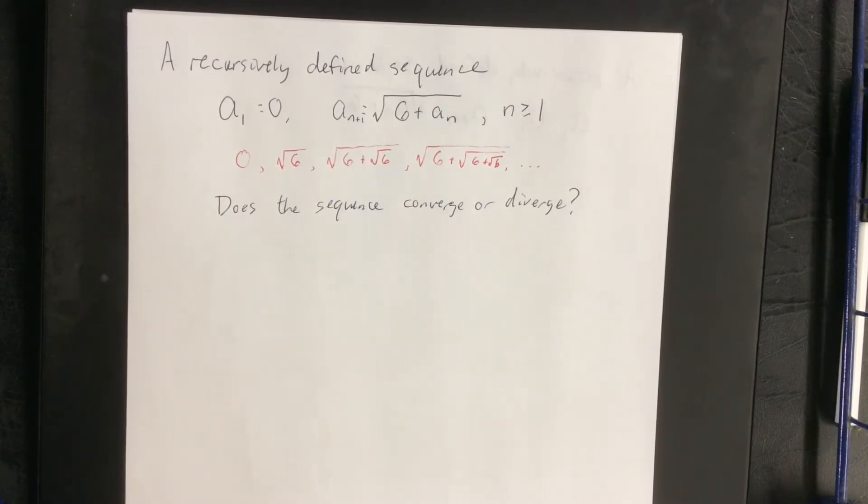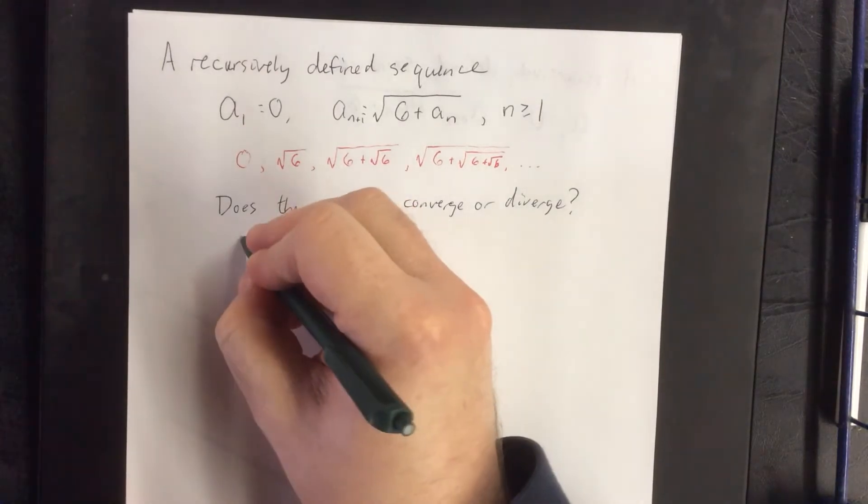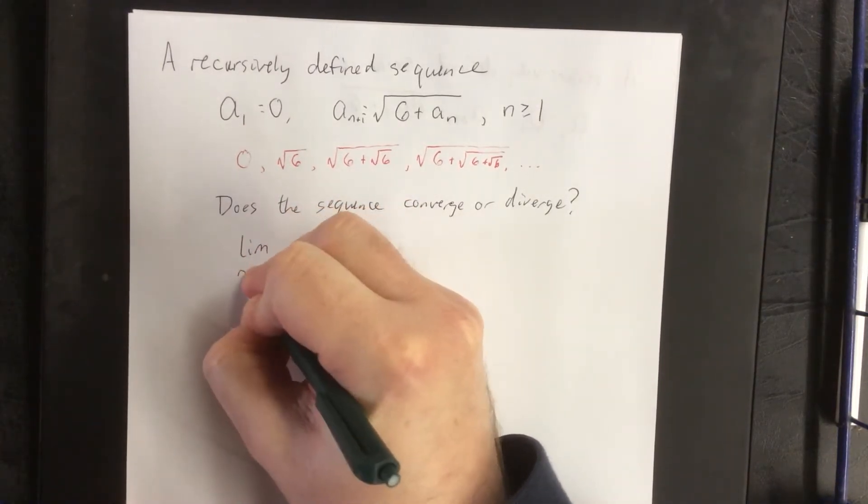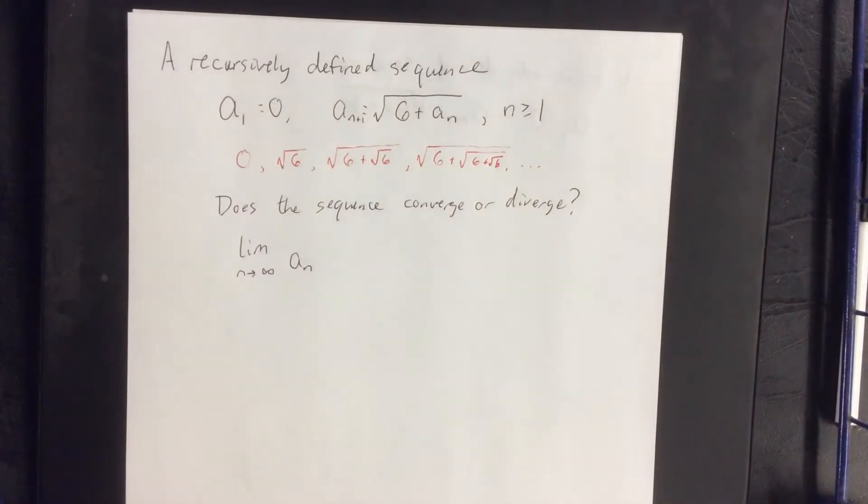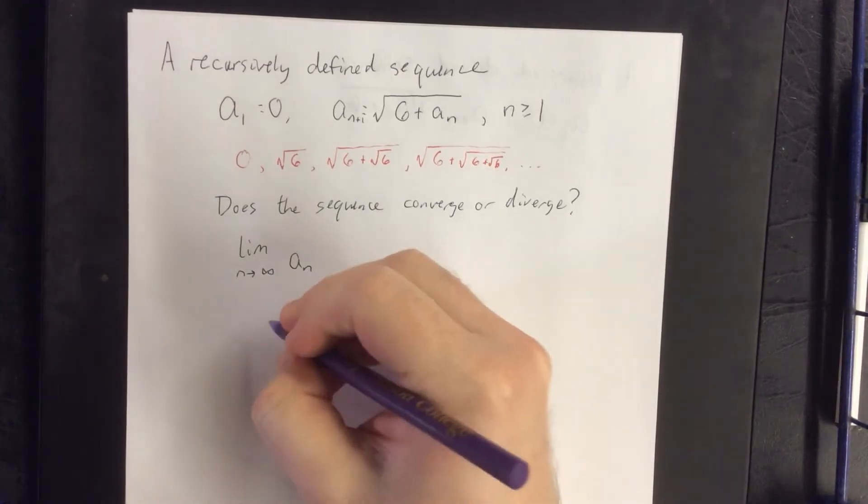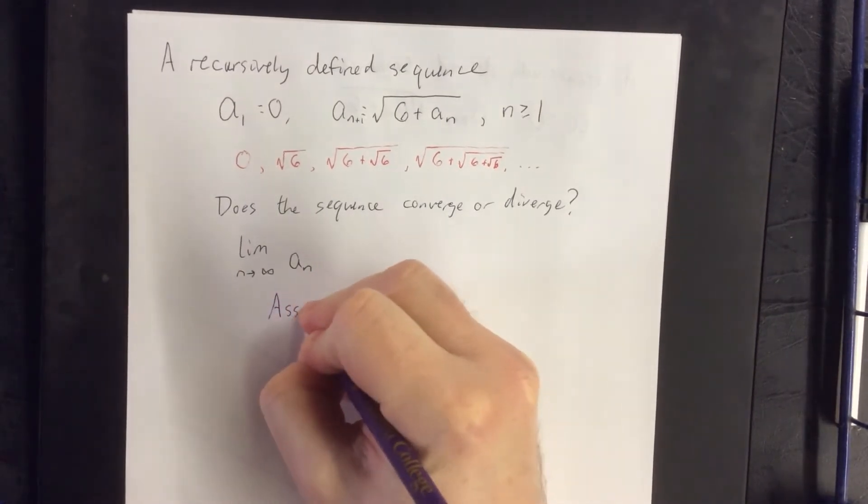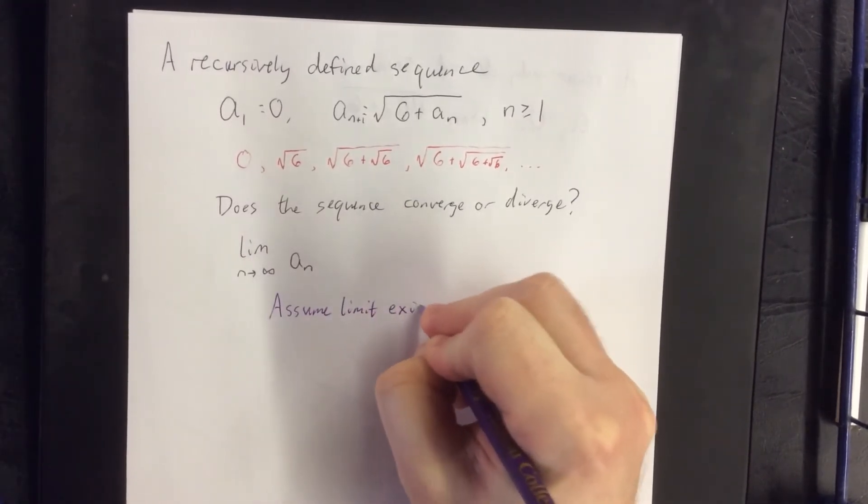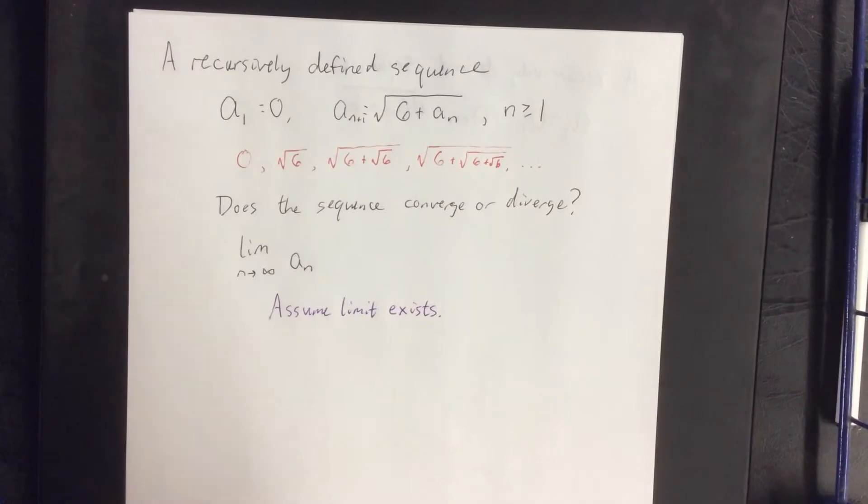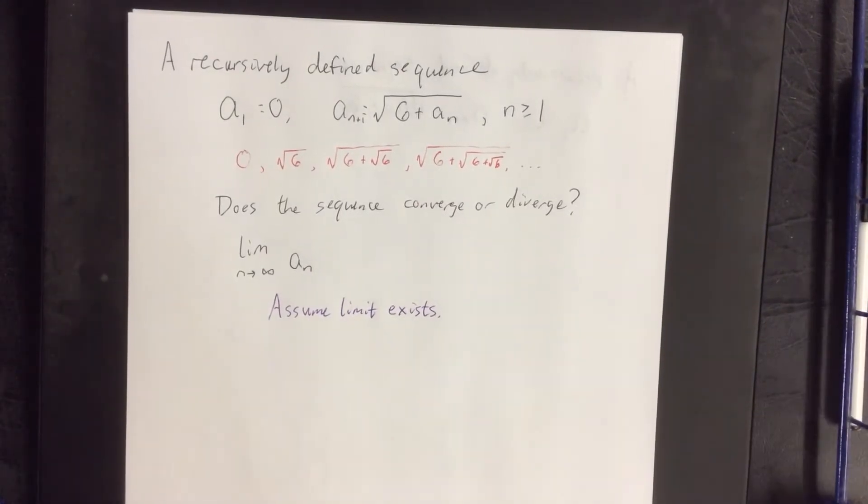In order for us to do so, we are going to need to take the limit as n goes to infinity of this recursively defined sequence. Now what we're going to do for a moment is assume that the limit exists. If you assume that the limit exists, you'll be able to do one of two things: determine its value or come up with a contradiction.